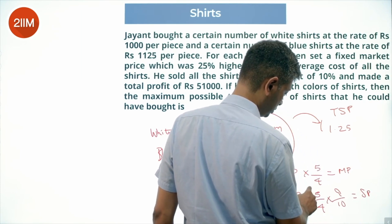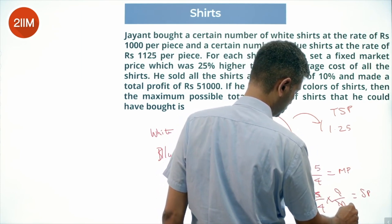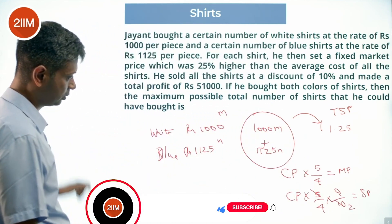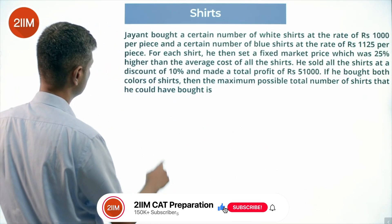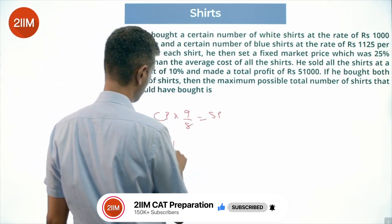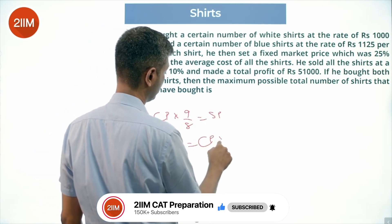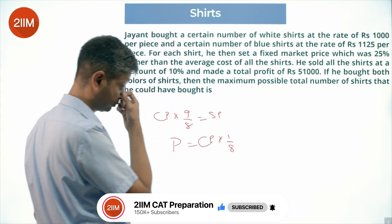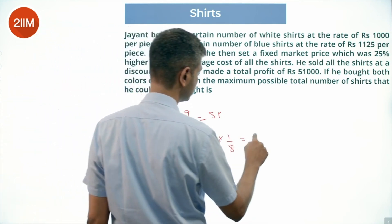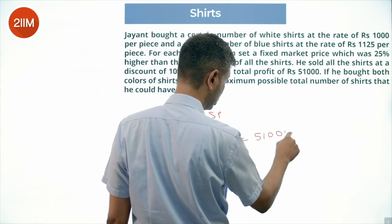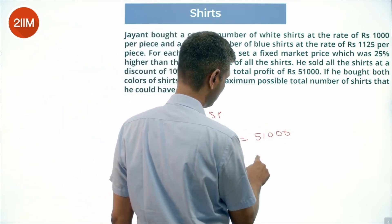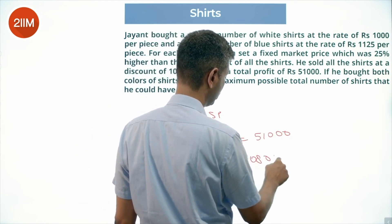This simplifies to cost price times 9/8 equals selling price. The profit is cost price times 1/8, which is given to be Rs 51,000. Therefore, the total cost price is 51,000 times 8, which equals Rs 408,000. That's the total cost price.